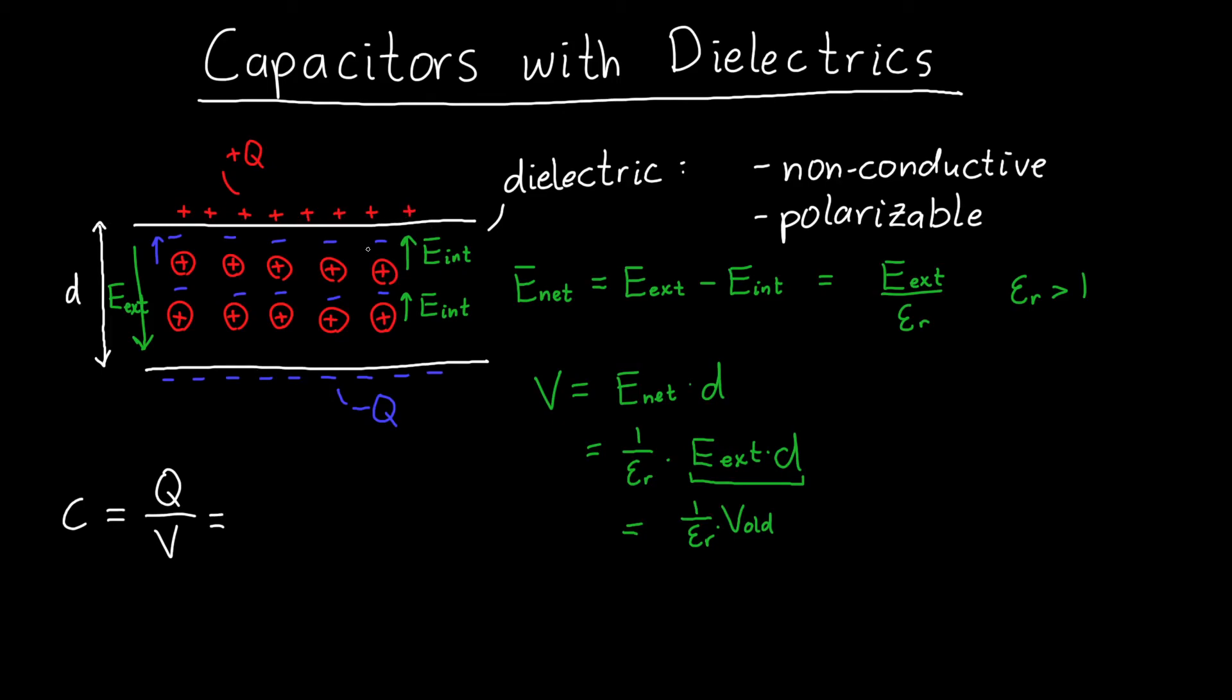If these two plates are just floating around in space, there was nothing that took away charge from either one of those plates. So my charge is the same as my old charge, which I'll just call Q old. But my voltage is one over epsilon r times my old voltage.